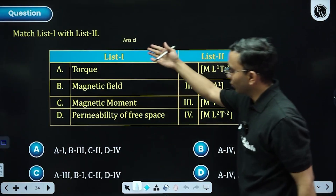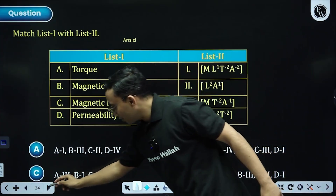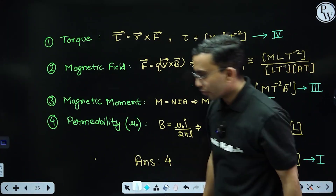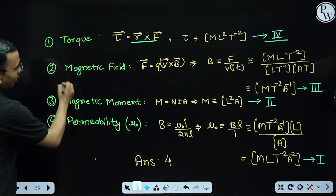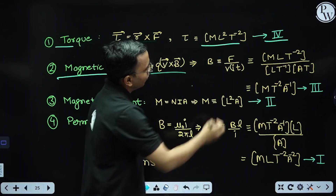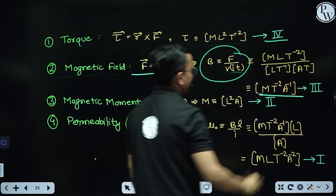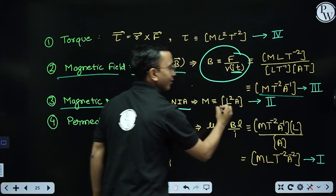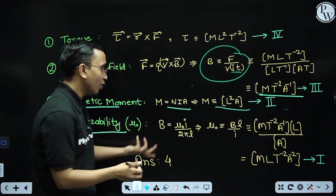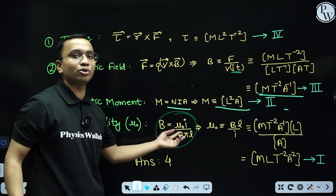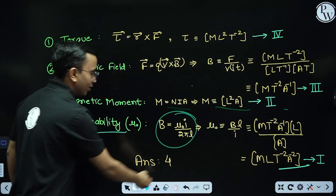Next question: find the dimensions of four given quantities. Torque = r × F, giving dimensions matching option 4. Magnetic field B from F = qv × B gives B = F/(vq), and since q = I·t, I can write the dimensions of B. Magnetic moment = nIA, write those dimensions. Permeability μ₀: using B = μ₀I/(2πl) for a long wire and substituting known dimensions of B gives dimensions of μ₀. The correct answer is option four.